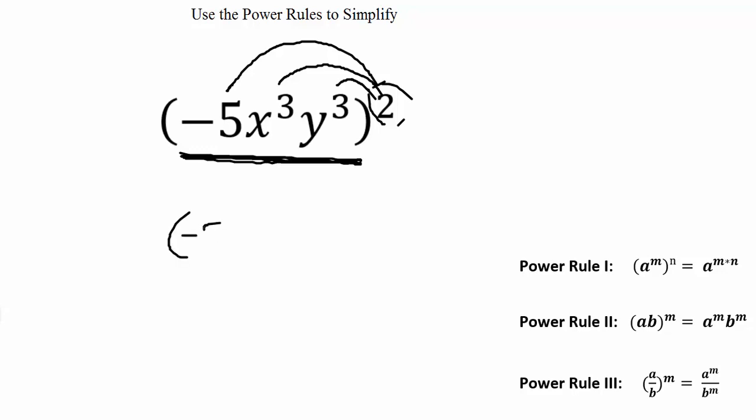We have negative 5 being squared, x³ being squared, and y³ being squared.